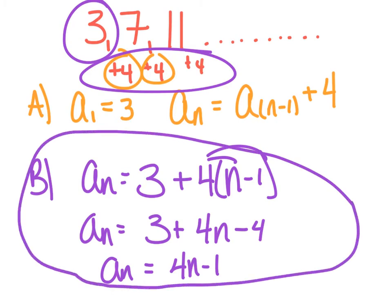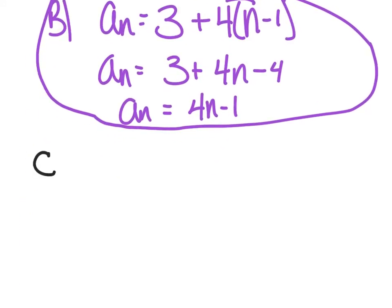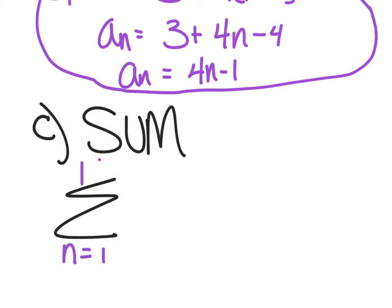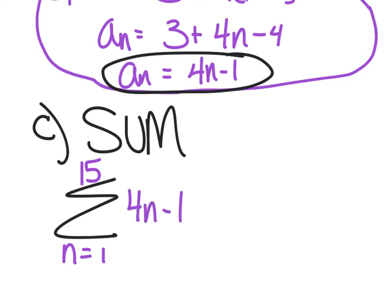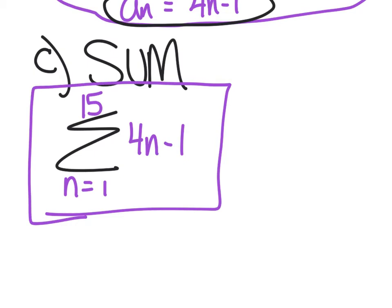Part C says find the sum of the series. The second I see the word sum, I need sigma notation. I'm going from the first term to the 15th. I'm summing my explicit rule, so: sigma from n equals 1 to 15 of 4n minus 1. I'd just go to my calculator and type this summation in — second window — and use x equals 1 to 15 of 4x minus 1 to get your answer.